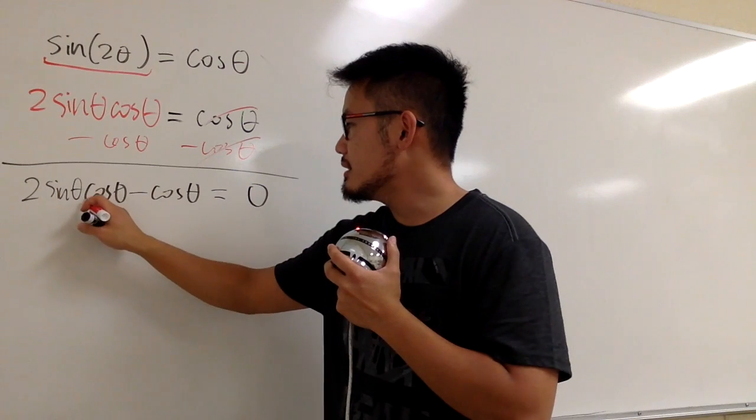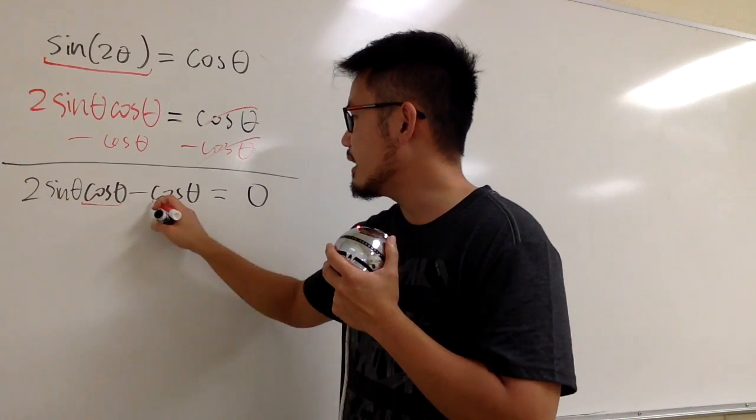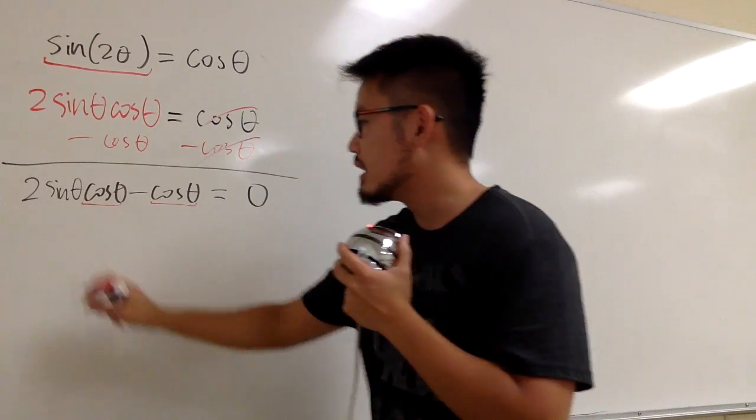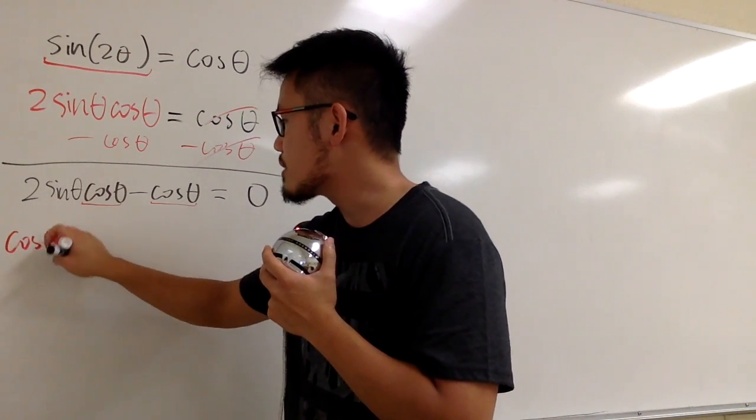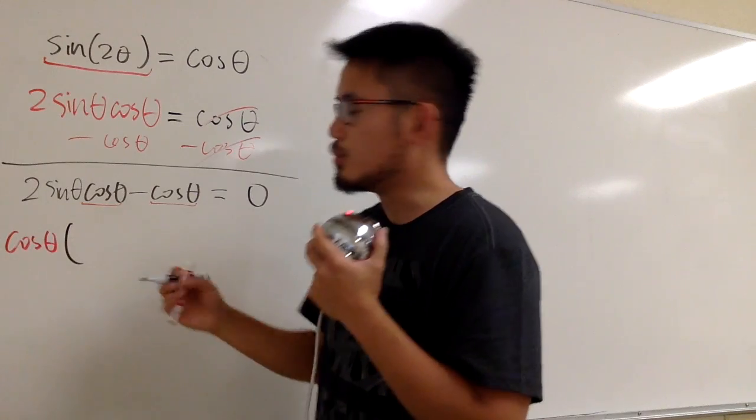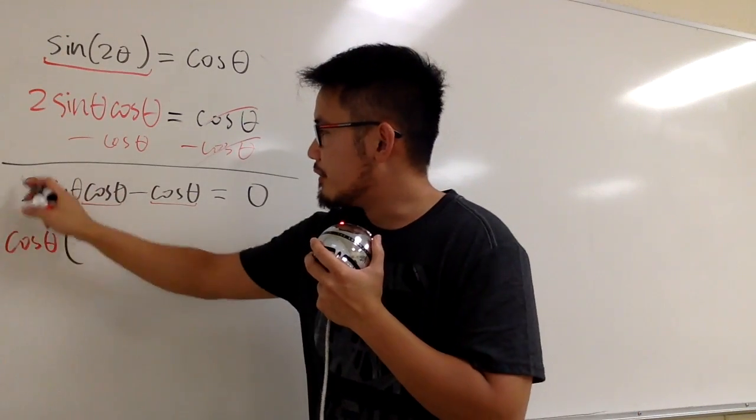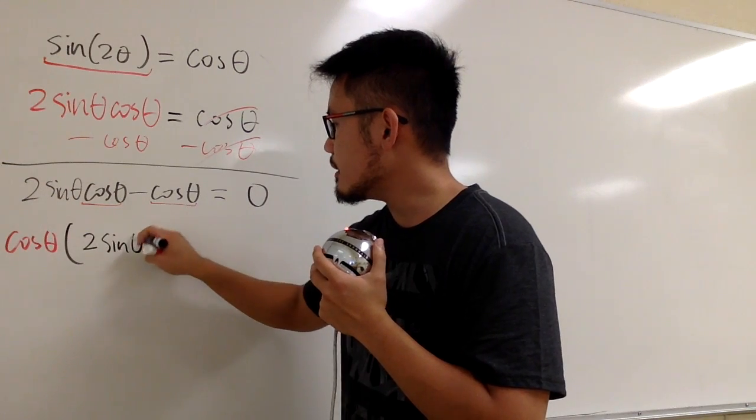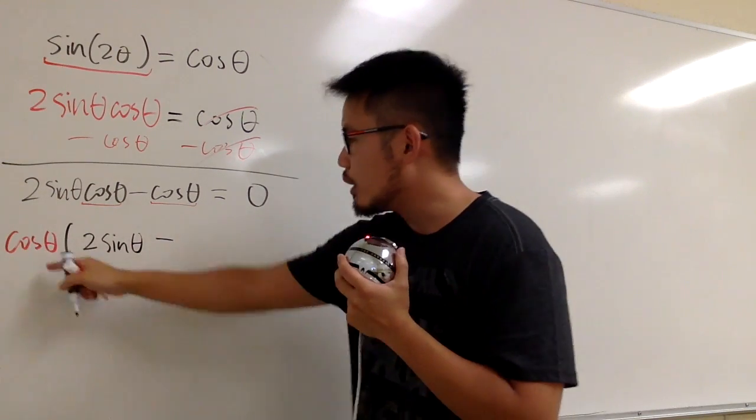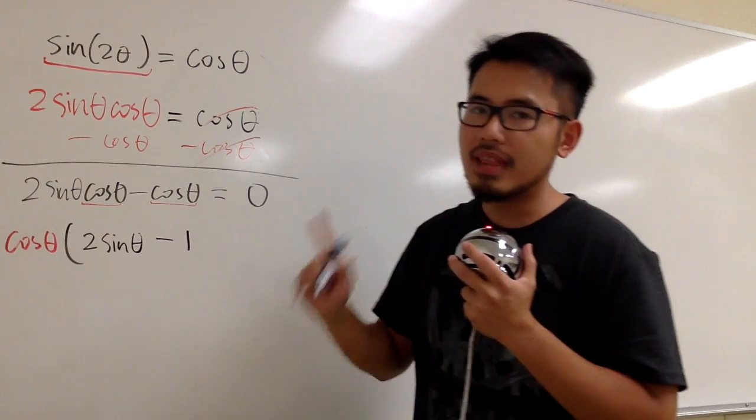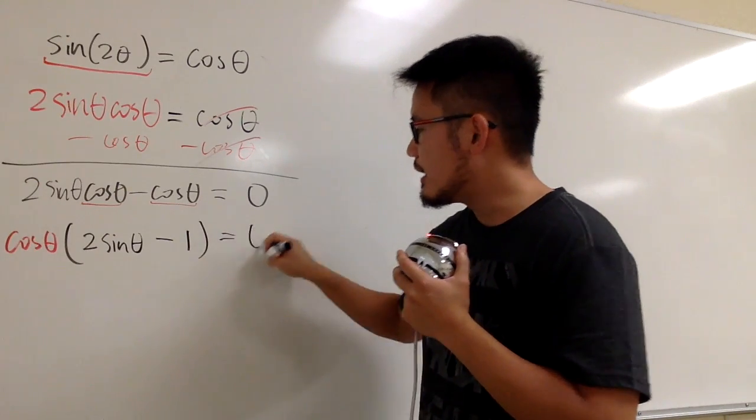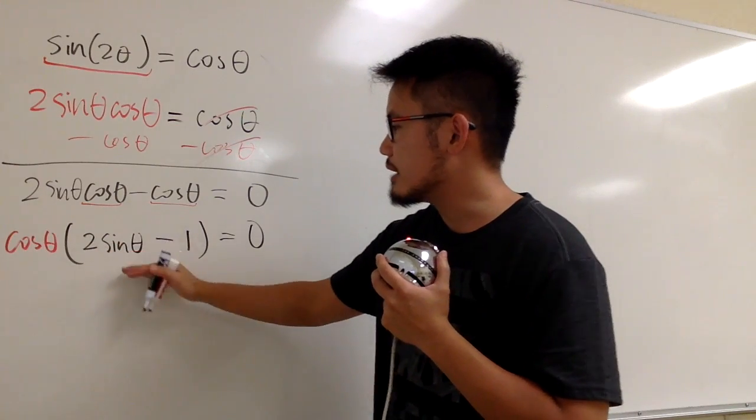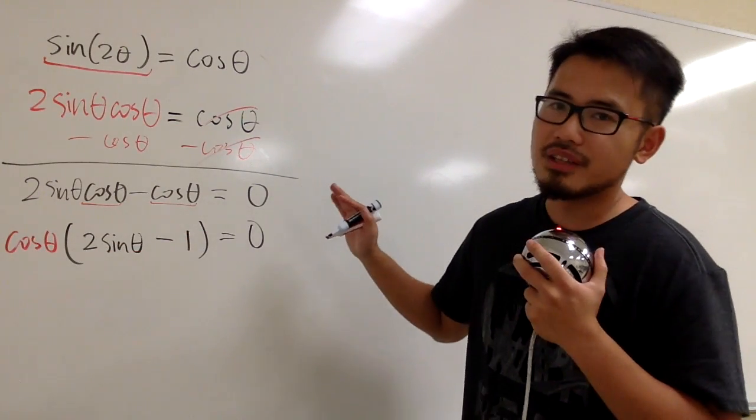As you can see, this term has cosine θ, and then this term also has cosine θ, so let's factor that out. We will factor out the cosine θ, and then what's the remaining things? The first term will just have 2 sine θ left, and then that's minus 1. So we have cosine θ times the quantity 2 sine θ minus 1, all together is equal to 0.